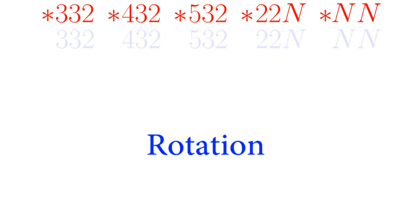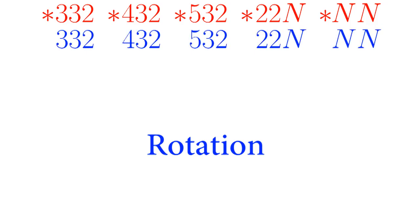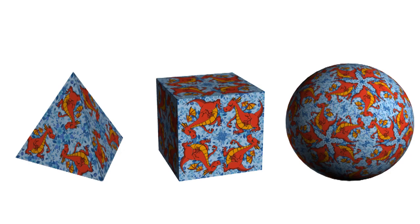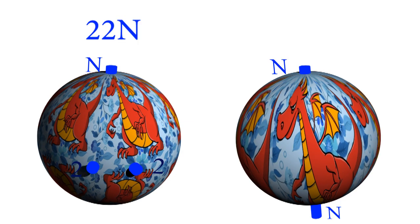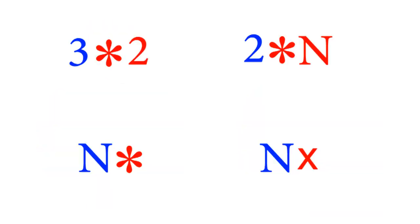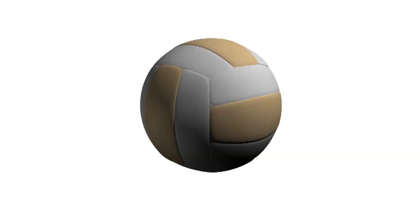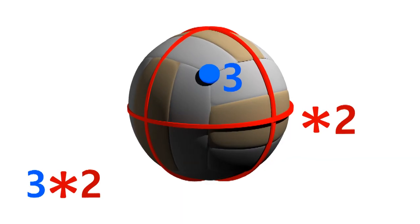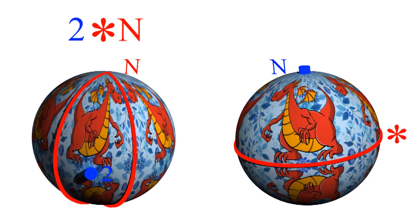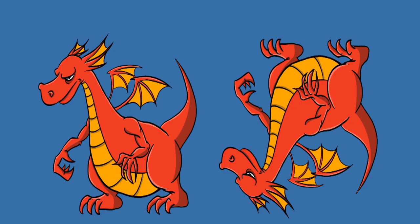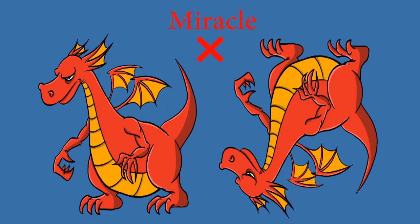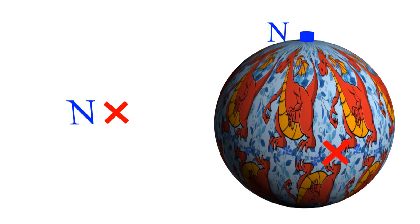Now let's look at rotations. There are also five symmetries that just use rotation, and they have the exact same numbers: three-three-two, four-three-two, five-three-two, two-two-n, and n-n. There are also four symmetries that involve both reflection and rotation: three-star-two (which volleyballs have), two-star-n, and n-star. Finally, there's another type of reflection we can do where we reflect the pattern and translate it, so it's not exactly a mirror reflection. The book calls this a mirrorless crossing, or a miracle, and uses the cross symbol for it. Like a normal reflection, it lowers the characteristic by one.